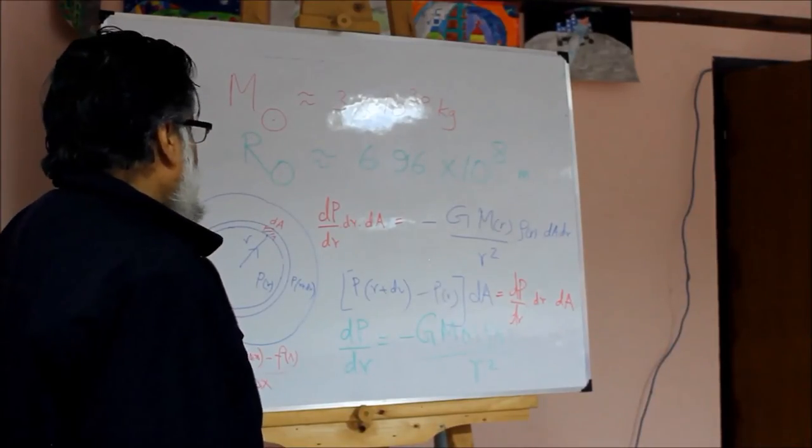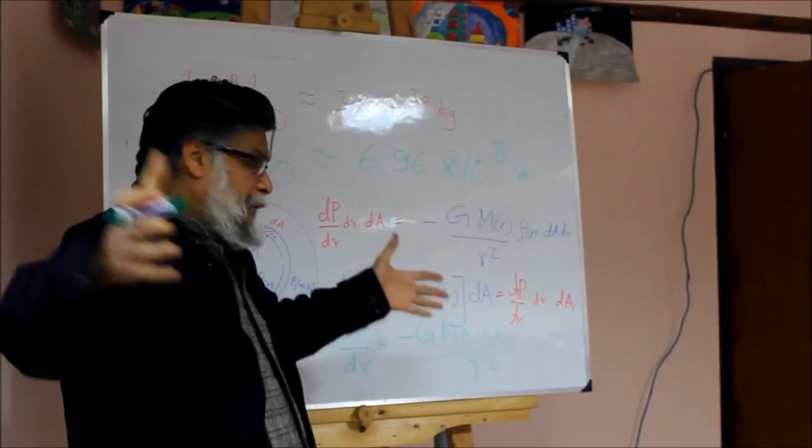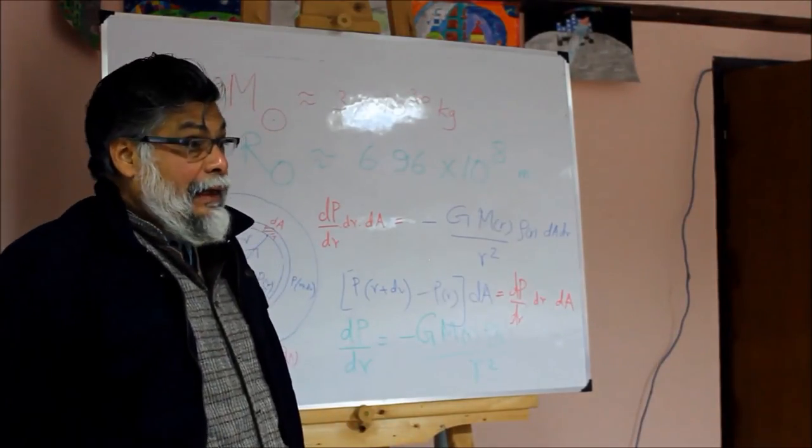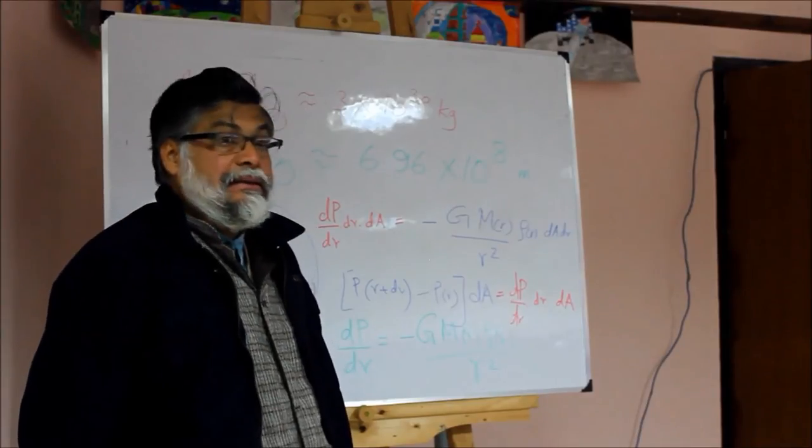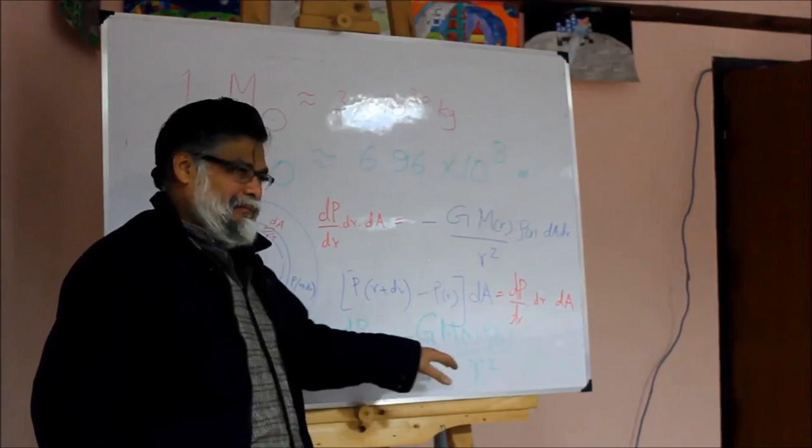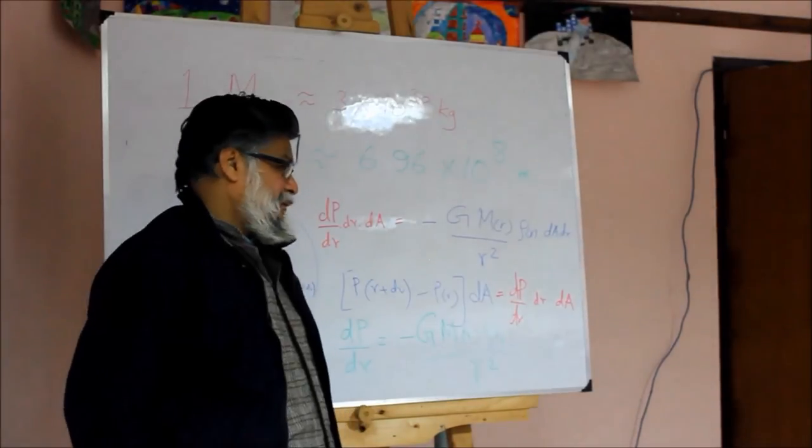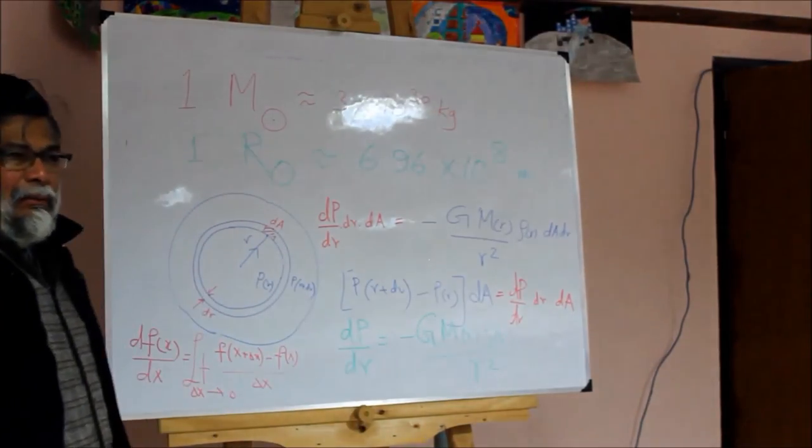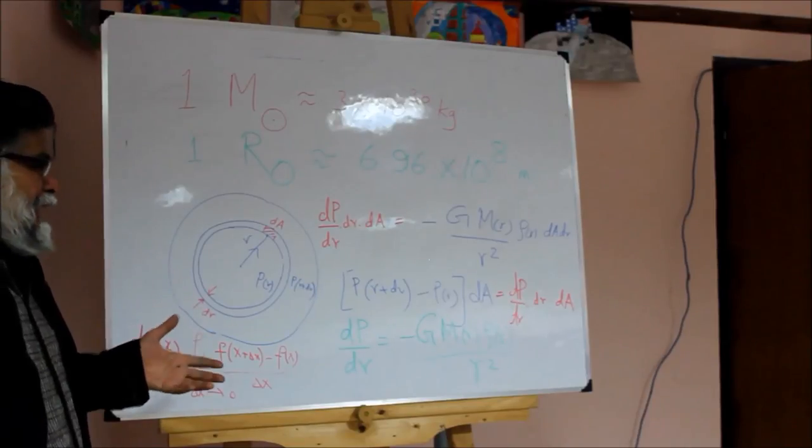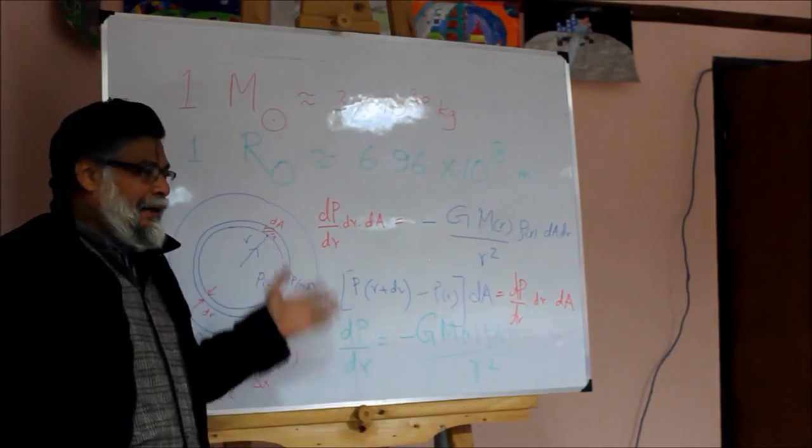The bottom line is: for a spherically symmetric object, in order that the object is neither collapsing nor expanding, this equation must be satisfied. A part of astrophysics dealing with stellar dynamics and stellar structure requires large training on how to solve such equations. In general it's not easy to solve because you don't know how M(r), rho(r), and dP/dr change with r. Those who do stellar structure have to go through a whole technique of how to solve such situations, how to reduce them to Laplacian equations and so on.